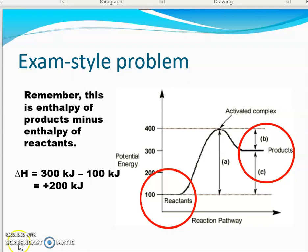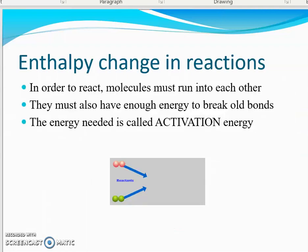If you said endothermic, you are correct. The products are higher energy than the reactants, so energy went into the system to make products — it entered the system, making it endothermic. We do keep seeing this little hill in the center, and that has a meaning: it's called the activation energy, something we'll study more in AP Chemistry.